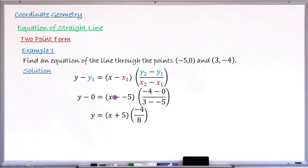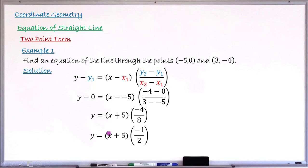Simplifying: y minus zero is just y. In the first bracket, x minus minus five becomes x plus five. In the second bracket, the numerator minus four minus zero gives minus four, and three minus minus five becomes three plus five, which gives eight. So we have y equals (x plus five) times (minus four over eight). Minus four divided by eight simplifies to minus one half.